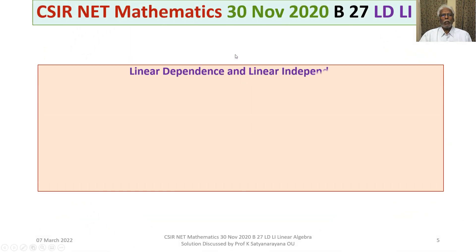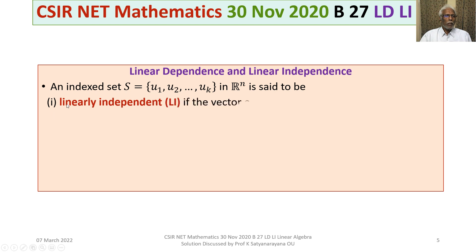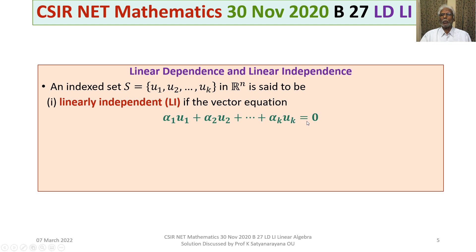Let us recall the concepts of Linear Dependence and Linear Independence in a vector space. An indexed set S equal to {U1, U2, ..., Uk}, indexed by 1, 2, up to k, in Rn is said to be linearly independent if the vector equation alpha1*U1 plus alpha2*U2 plus ... plus alphaK*Uk equals the zero vector has only the trivial solution.